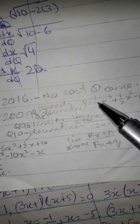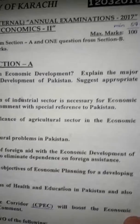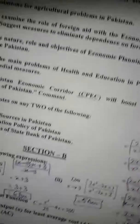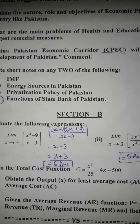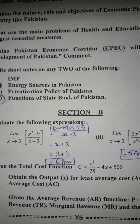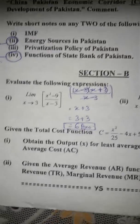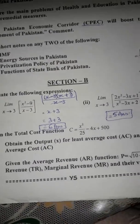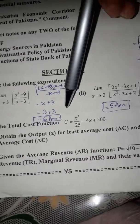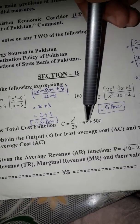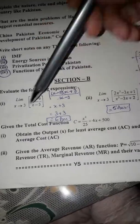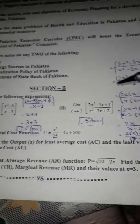In 2016 and 2009 there were no cost questions — only limitations and derivatives. The 2017 question is the same as those from 2005, 2010, 2011, and 2006. It is a repeated question: c equals x² ÷ 5 minus 4x plus 500, with a second part on limitations.